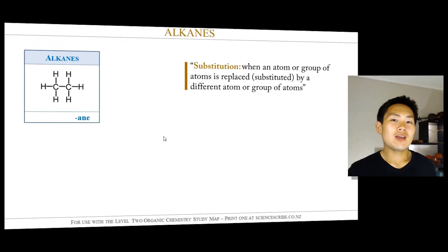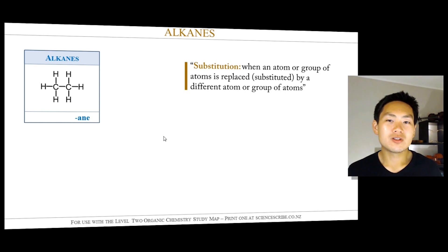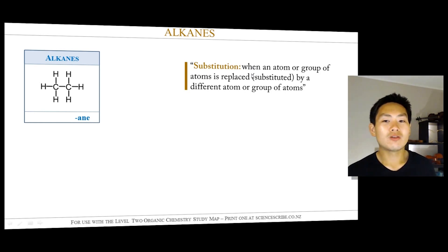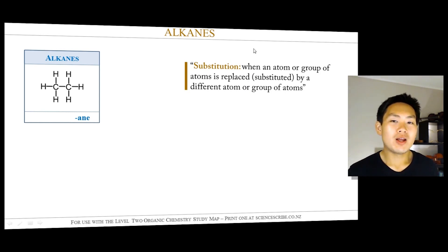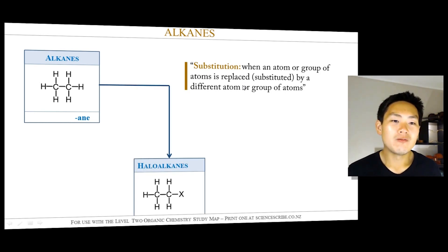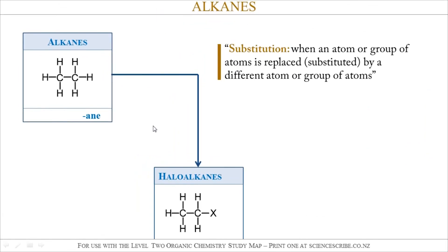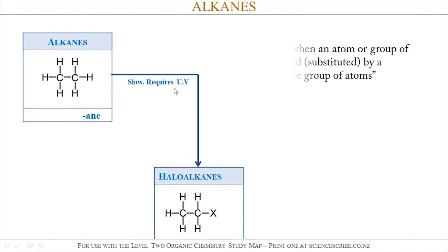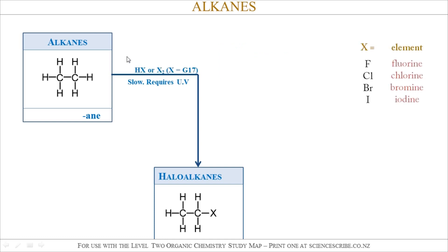As for the way alkanes react, alkanes undergo something called a substitution reaction. A substitution reaction is when an atom or a group of atoms is replaced — hence substituted — with another atom or group of atoms. Alkanes are capable of doing this to form something called a haloalkane. To do that, it's quite slow and it needs UV light. You would also need to add either HX or X2, where X is an element from Group 17.